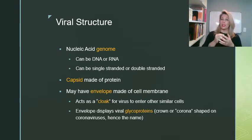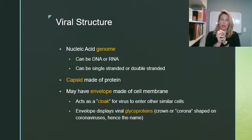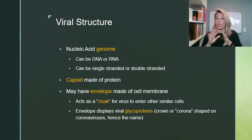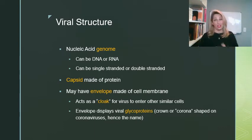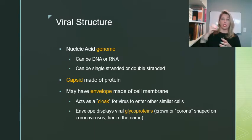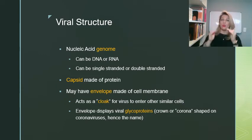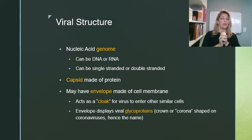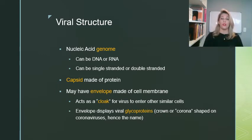What happens is that the virus, as it buds out, grabs some of that cell membrane and surrounds itself with it — it kind of acts like a cloak so it can sneak up on the next cell it wants to get inside. The envelope also displays little proteins on the outside that are specific to that virus, allowing it to adhere to the cell it's going to enter. You can actually identify the virus itself based on the proteins stuck on the outside of that envelope.